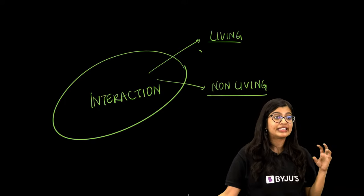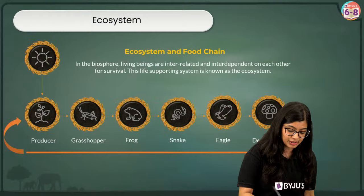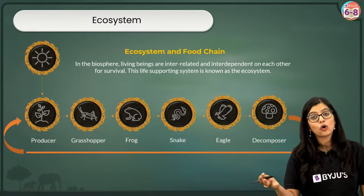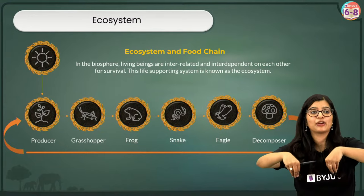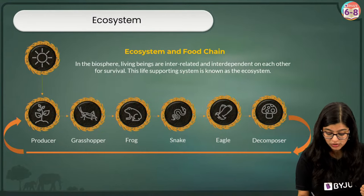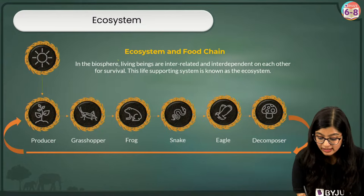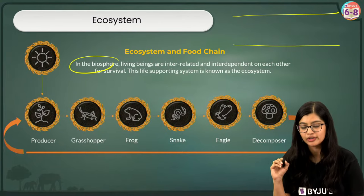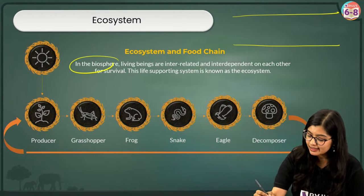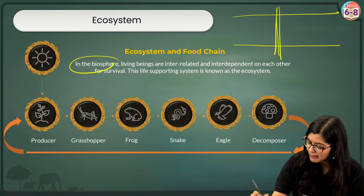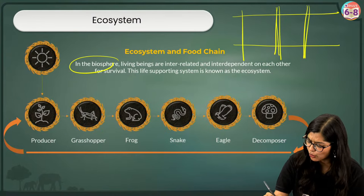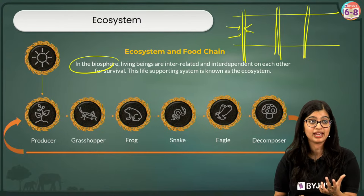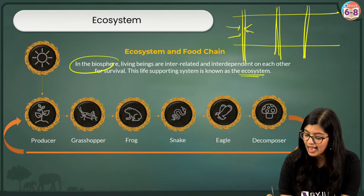A region where there is interaction between living and non-living is what we call an ecosystem. In the biosphere — think of it as a road — there are many zones where there is interaction between living and non-living that supports life. Each such zone is what we understand as an ecosystem. So the biosphere contains ecosystems within it.